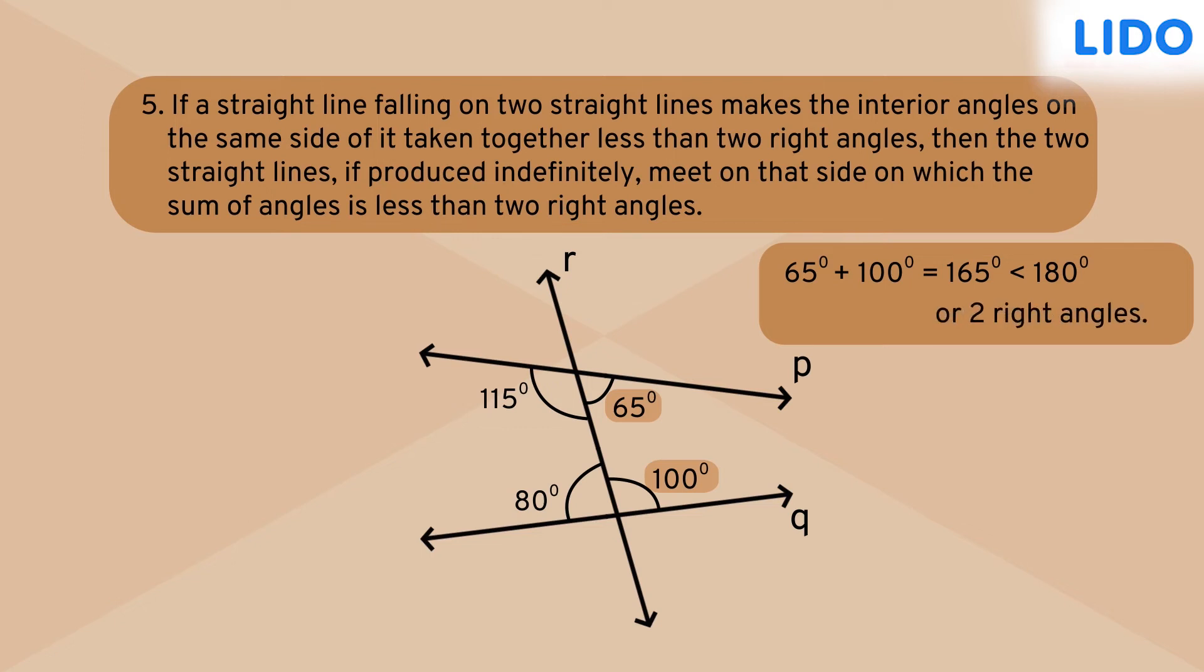Moving forward to the second part, let's extend the two lines towards the right, that is to the side where the sum of interior angles is less than 180 degrees. And look, we find that the two lines meet on this side, and that is what Euclid's fifth postulate means.